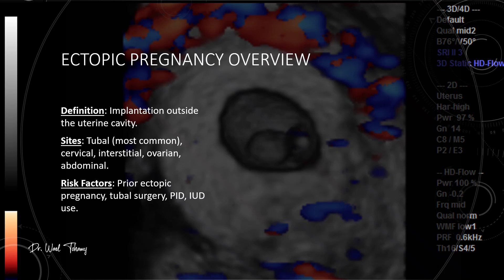Let's move on to ectopic pregnancy, when the embryo implants outside the uterine cavity. The most common site is the fallopian tube, but it can also occur in the cervix, the interstitial portion of the tube, the ovary, and even the abdominal cavity. Risk factors include a prior ectopic pregnancy, previous tubal surgery, pelvic inflammatory disease, and the use of an intrauterine device.